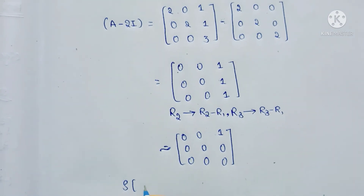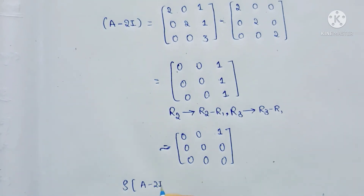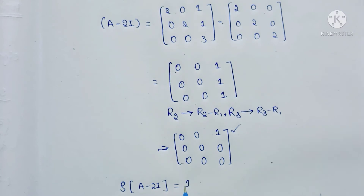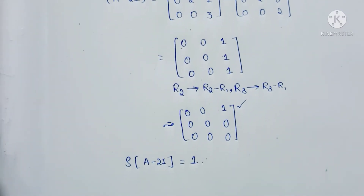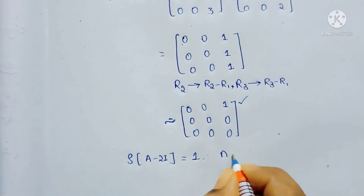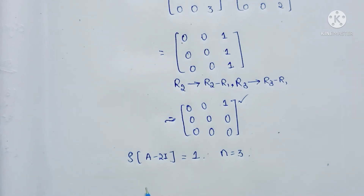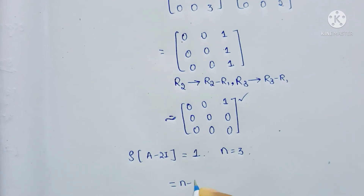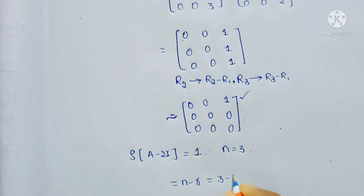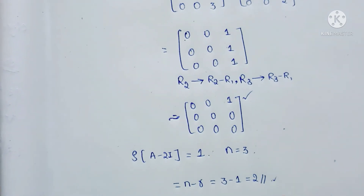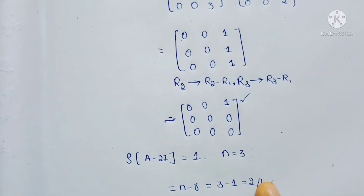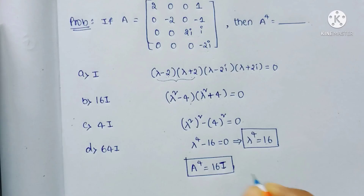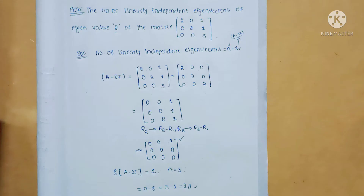After row reduction, we have only one non-zero row, so the rank R = 1. For a 3 by 3 matrix, N = 3. Therefore the number of linearly independent eigenvectors = N minus R = 3 minus 1 = 2. So there are two linearly independent eigenvectors for eigenvalue 2. If you have any doubts, please comment below. Thanks for watching.